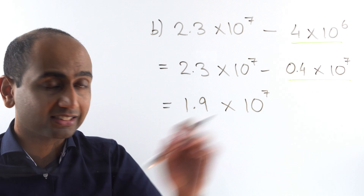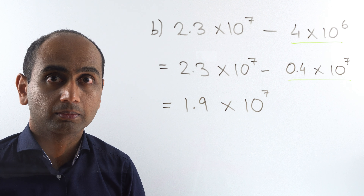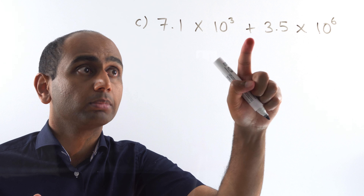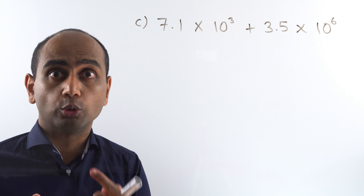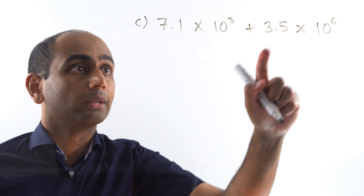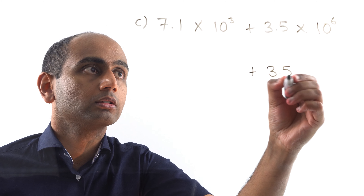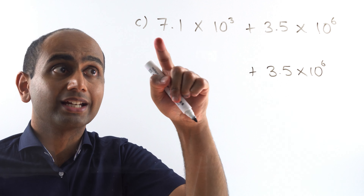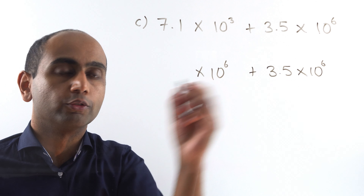Let's just check — is that in standard form? Yes it is, so we can leave it at that. Here's question C: 7.1 times 10 to the power of 3 plus 3.5 times 10 to the power of 6. Again I'm going to look for my higher power of 10 — that's the 3.5 times 10 to the power of 6 — so I'm going to keep that one the same, and rewrite the other number as something times 10 to the power of 6.